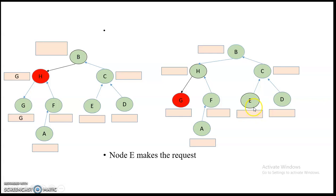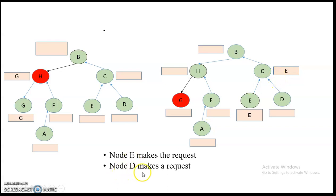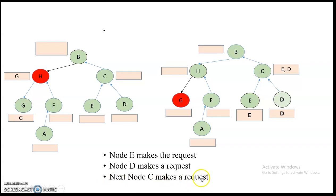Node E makes a request: it updates its own queue, then passes its name to its neighbor C on the directed path. At the same time, node D also makes a request — D updates its own queue and sends its name to its neighbor C. So C's queue is updated with both E and D appended in order.